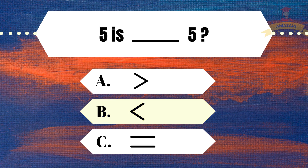5 is: A) greater than, B) less than, C) equal to 5. And the answer is C, equal.